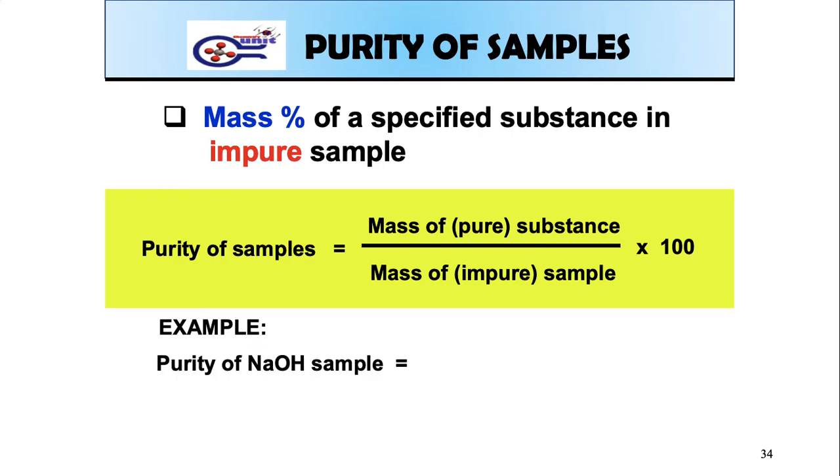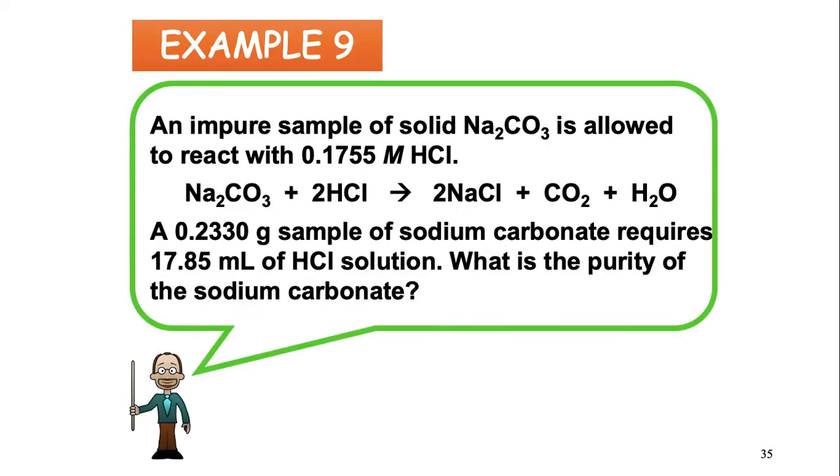purity of sodium hydroxide sample: 49.4 gram of sodium hydroxide, that's pure sodium hydroxide, over 50 gram sample, that's impure sample, times by 100, you get 98.8%.